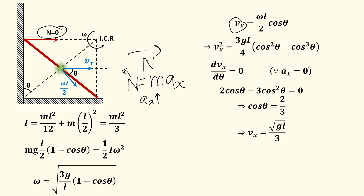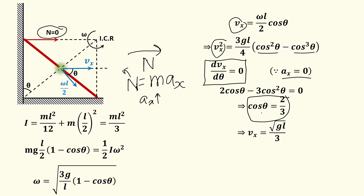Since Vx is maximum at that moment, Vx² will also be maximum. The expression for Vx² involves a cosθ² minus cosθ³ term. Applying maxima-minima by setting dVx²/dθ = 0, we get cosθ = 2/3. Substituting cosθ = 2/3 into the expression for omega gives the value of ω, and then substituting both omega and cosθ into the expression for Vx gives the final answer: Vx = √(gL/3). Thank you.